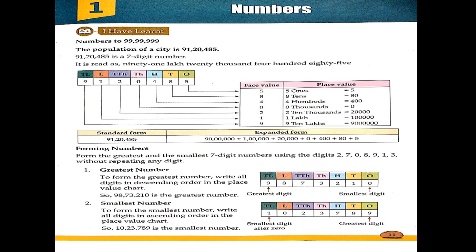We are going to learn from 10 lakhs: lakhs, 10,000, thousands, 100, tens and ones. These are our place values of our digits, through which we can form a number of digits.